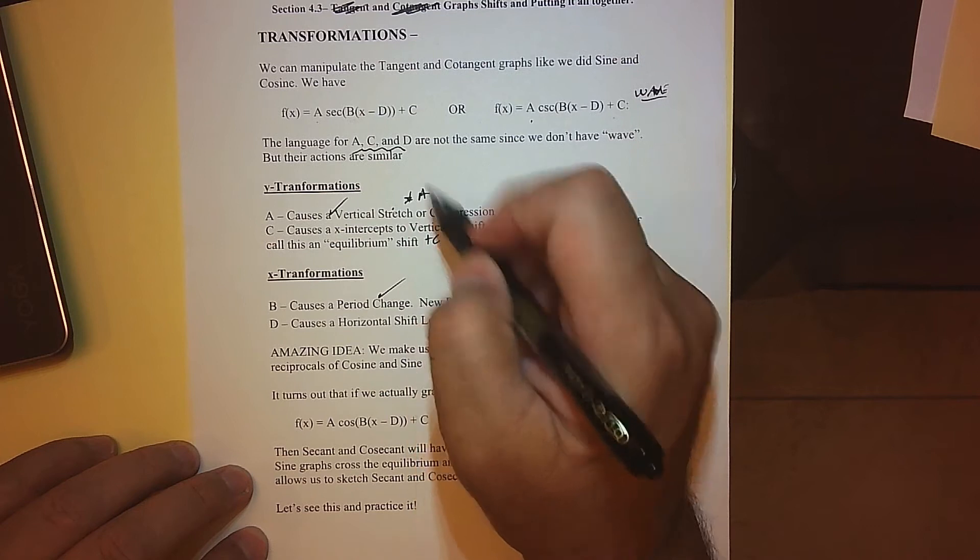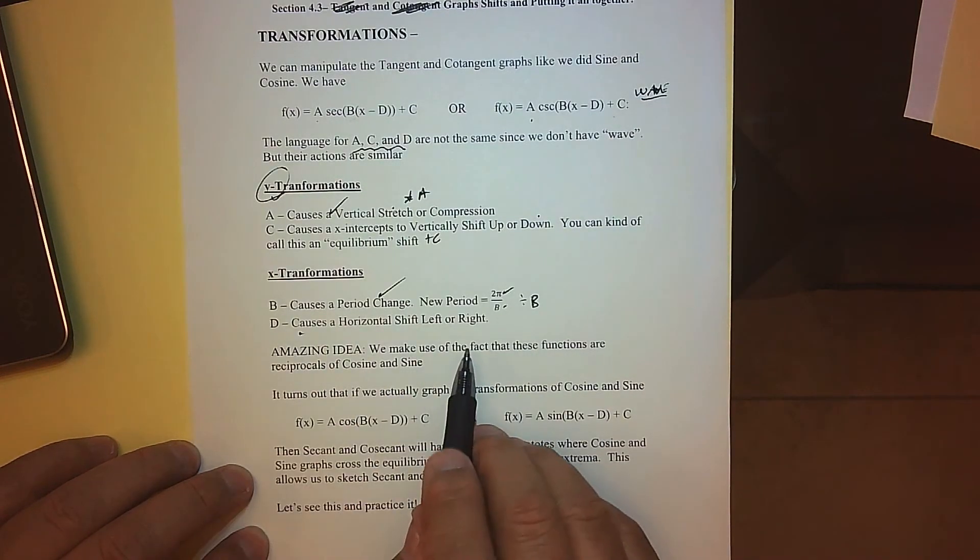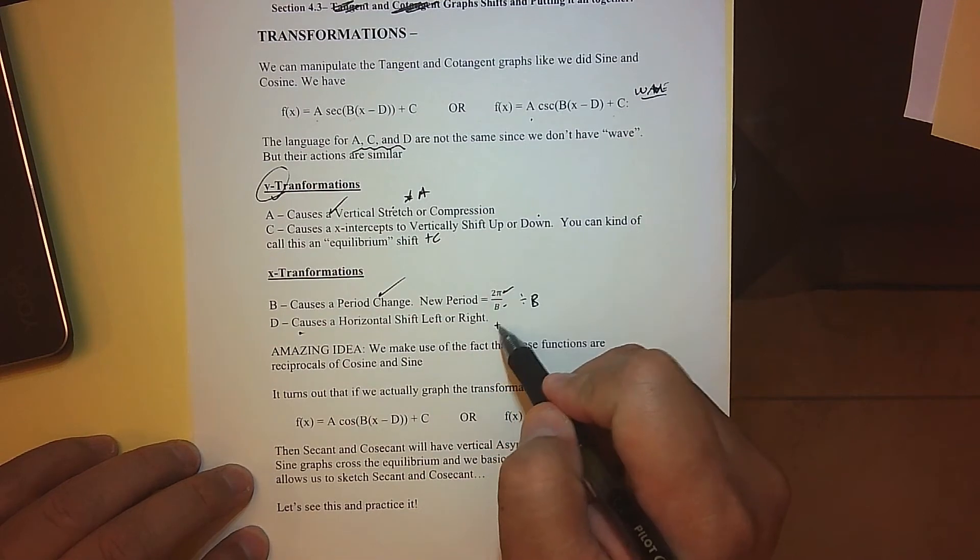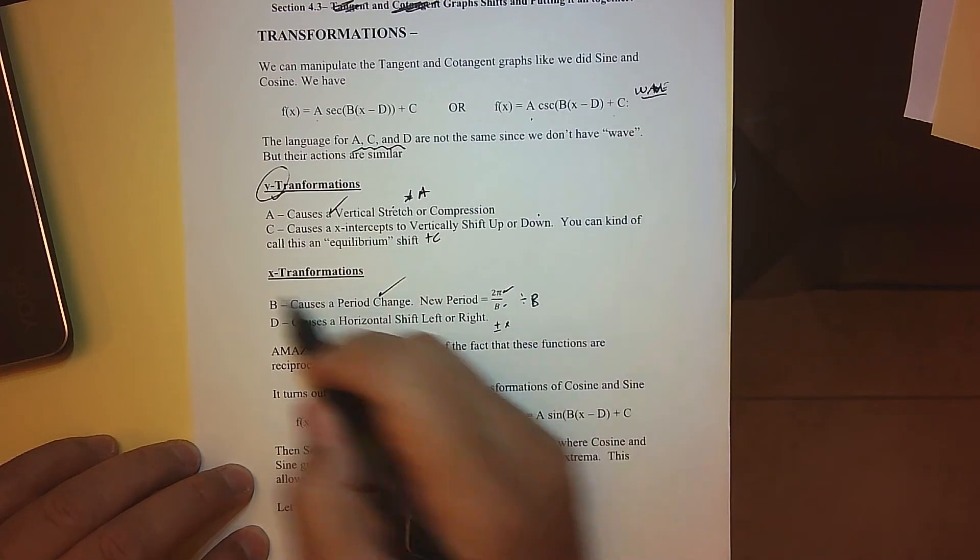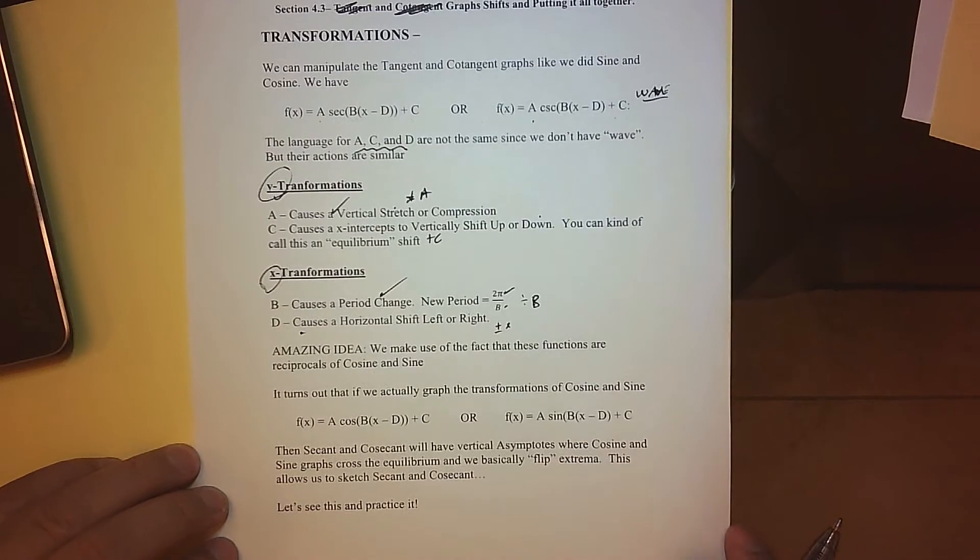Here we're going to multiply them by a, and here we're going to multiply by c all the y-values. And then d causes a shift left to right, so we're just going to basically add or subtract this to all our x-values with regard to that, just like we did.